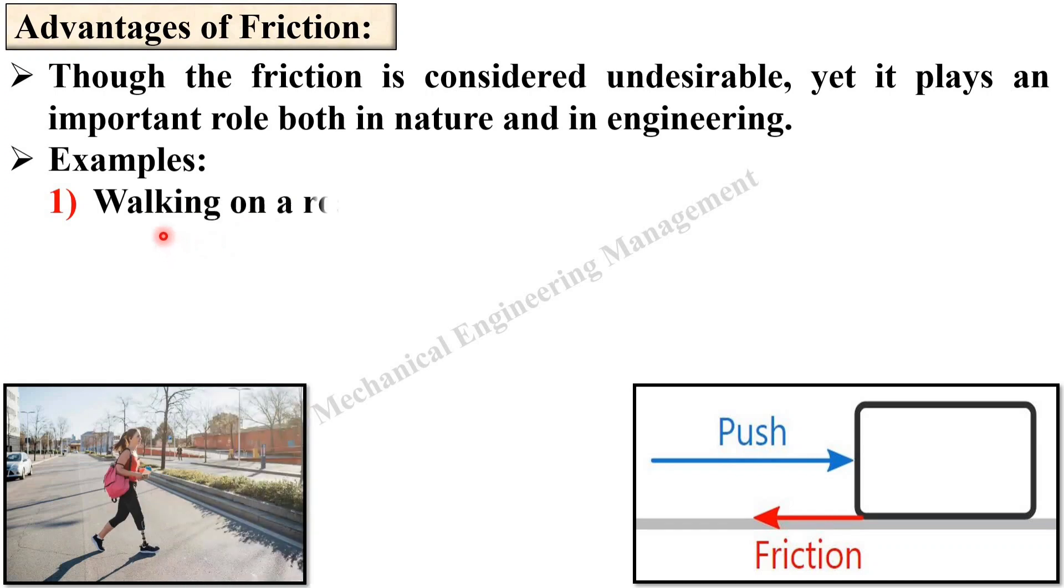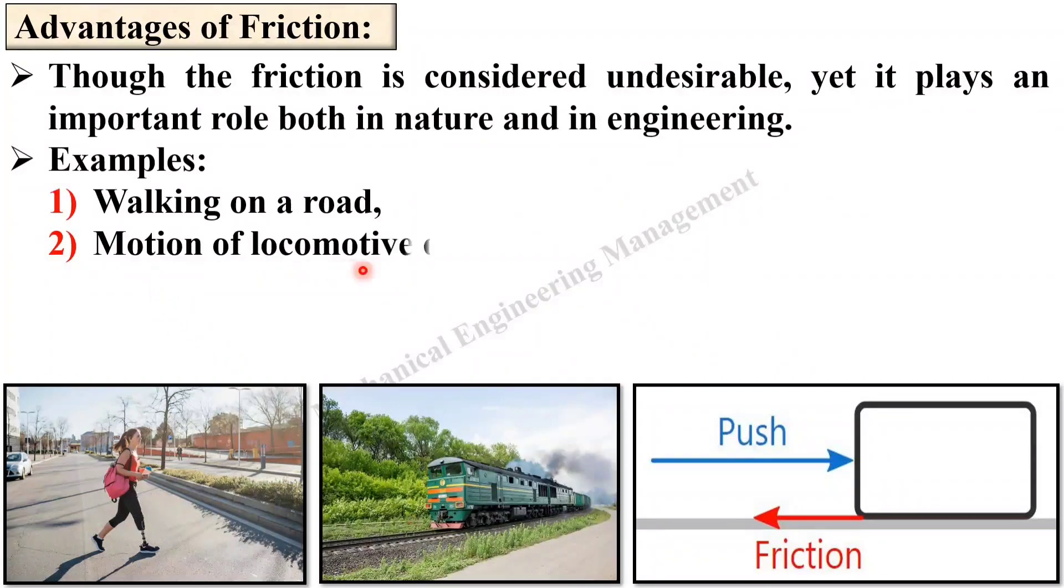First, walking on a road that is due to the friction only. Here you can see walking is possible due to the friction between the surface of the shoes and surface of the road. Next, motion of the locomotive on rails. Here the motion of this locomotive on the rail that is due to the friction.